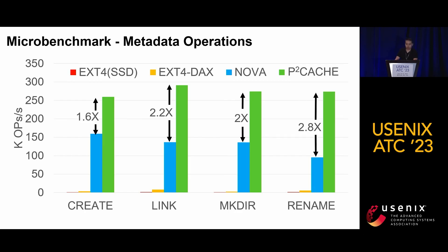We first show how P2Cache benefits metadata operations. We chose four metadata operations across five systems — more can be found in our paper. The results show that our solution significantly accelerates the speed of all four metadata operations compared to all other cases. For example, compared to the PM-specialized file system NOVA, our solution shows around three times performance improvement. This is due to the lightweight operation log of P2Cache.